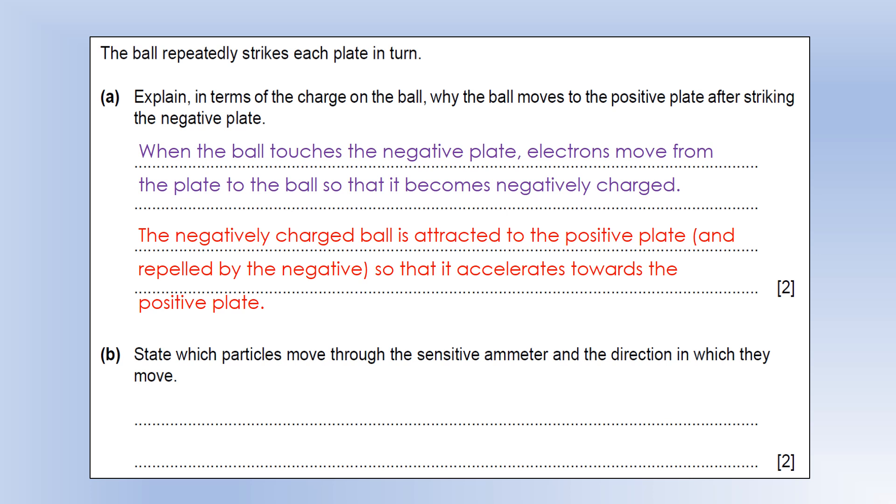State which particles move through the sensitive ammeter and the direction in which they move. Electrons are the particles that move, and they're going to be flowing from the positive plate because when the ball strikes the positive plate, it's going to discharge its electrons through the positive plate. They'll then flow through the ammeter and go back onto the negative plate. The other way of thinking about it is the reason the positive plate is positive is because electrons are constantly leaving it and have gone to the negative plate. That's how we've created the field in the first place.